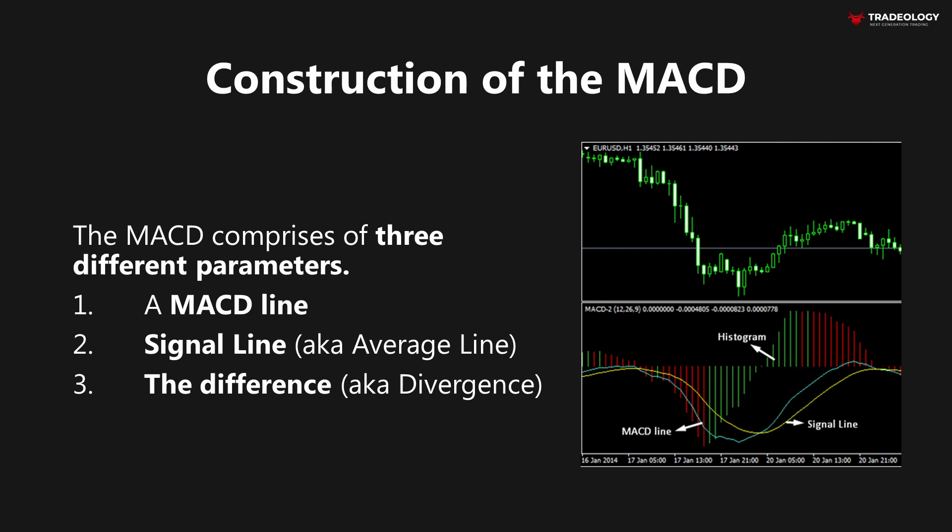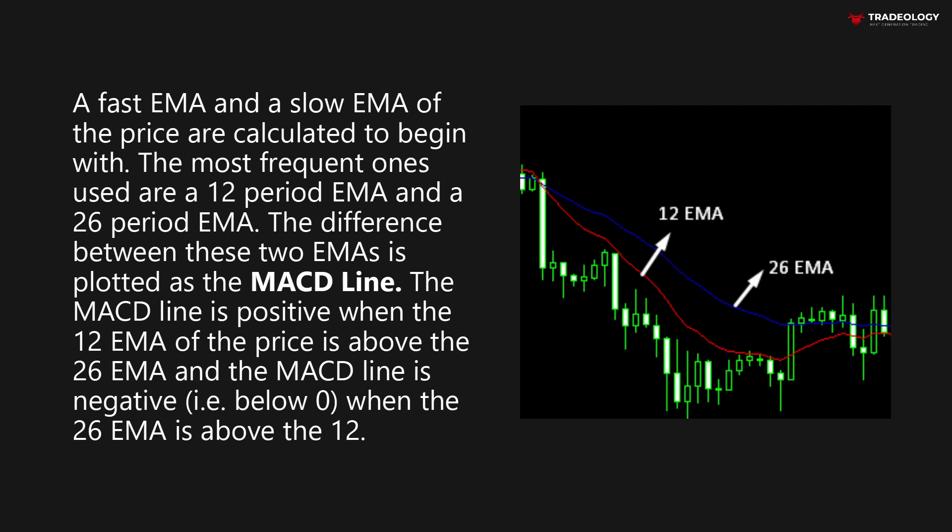Now let's have a look at the construction of the MACD. It's comprised of three different parameters: a MACD line, a signal line or average line, and the difference or divergence. A fast EMA and a slow EMA of the price are calculated to begin with. The most frequent ones used are the 12 period EMA and the 26 period EMA. The difference between these two EMAs is plotted as the MACD line. The MACD line is positive when the 12 EMA of the price is above the 26 EMA, and negative when the 26 EMA is above the 12.